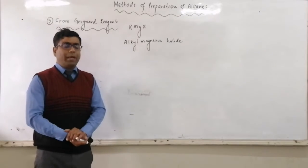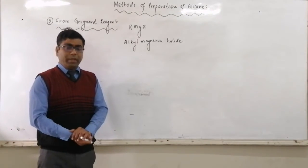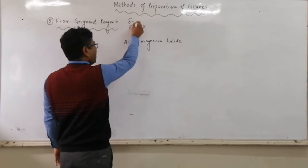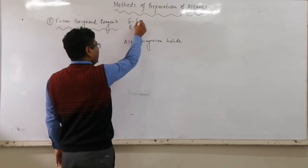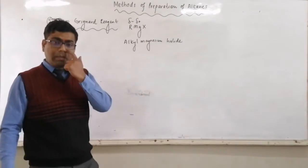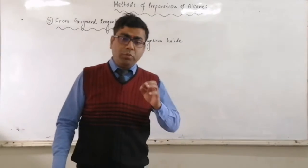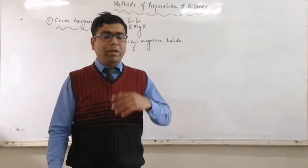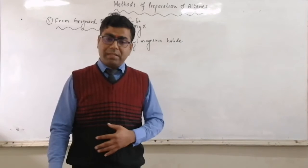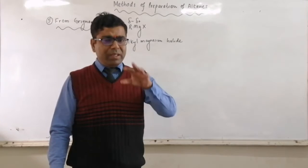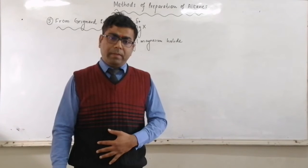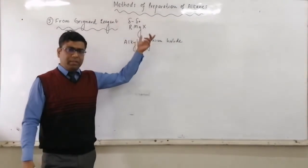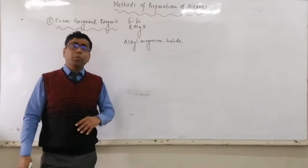X can be chlorine, bromine, or iodine. The important part is that the carbon bonded to the magnesium atom carries a delta minus charge, and magnesium carries a delta plus charge. Carbon bonded to magnesium has delta minus charge, and magnesium has delta plus charge. So whenever a chemical reaction of Grignard reagent takes place, the Mg unit moves separately and the R unit moves separately.